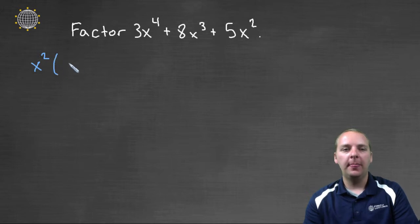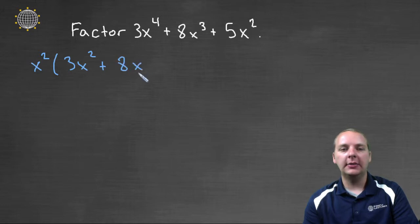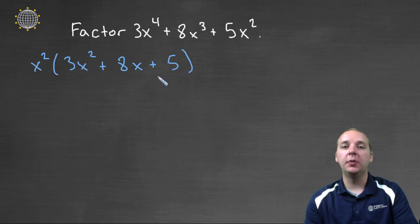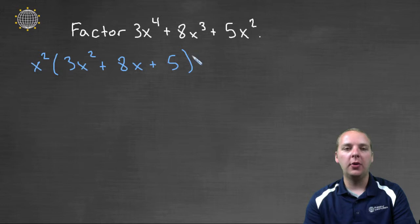So we have x squared times 3x squared, because x squared times 3x squared would give me x to the fourth, plus 8x plus 5. Those are the remaining two terms we would need, so that if I distributed the x squared through I'd get my original polynomial.